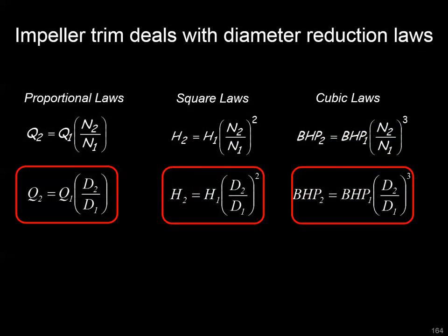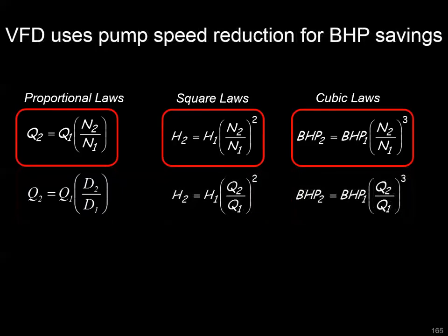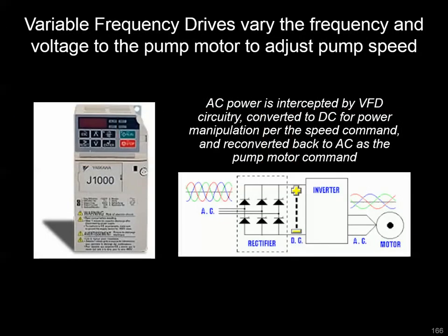This opportunity deals with the diameter reduction laws we see from the affinity equations. What a variable frequency drive, or VFD, does is leverage these same relationships but using speed reduction. I won't cover exactly how a VFD operates — follow the link if you'd like more detail about the operation of these devices. But essentially we're intercepting a power signal, converting it to DC, making the change, and then reconverting it back to AC as the reduced signal to facilitate a speed reduction at the pump impeller.